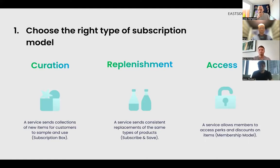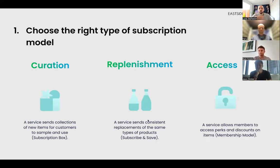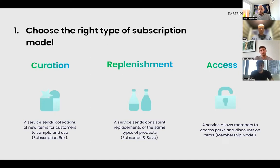On the curation side, this is more the subscription box model — different products sent out on a monthly basis. You've got replenishment, which is the consumable side — vitamin brands or anything consumable that you're going to need regular replenishment of. And then access, which allows members access to different perks and discounts. Some of these are more true to a standard subscription model like curation and replenishment; others, like the membership model, we're seeing fashion brands go down. Harry, are you seeing any particular trends in where people are going in terms of these subscription models?